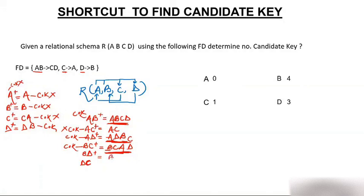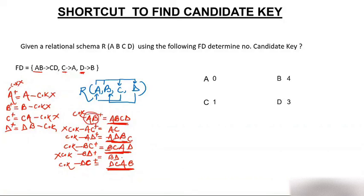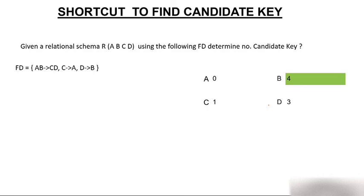Closure of DC: starting with DC, using C→A we get A, and using D→B we get B — now we have all attributes ABCD. DC determines all attributes, so DC is a candidate key. In total we have four candidate keys: AB, AD, BC, and DC. The answer is 4. The correct answer is confirmed to be 4. This is all about the shortcut method for finding candidate keys. Thank you.